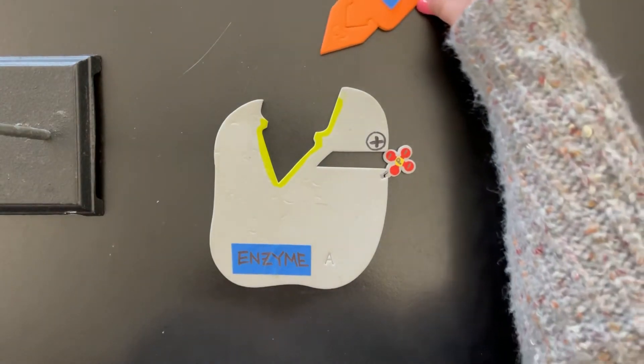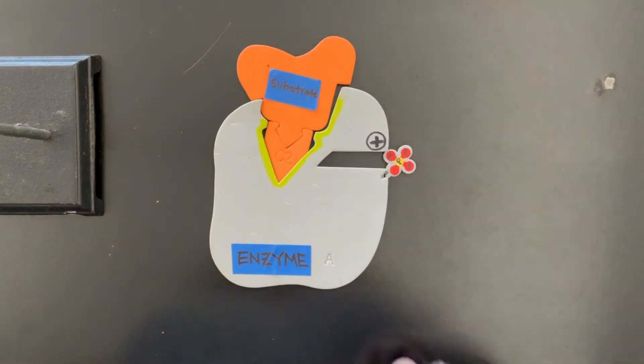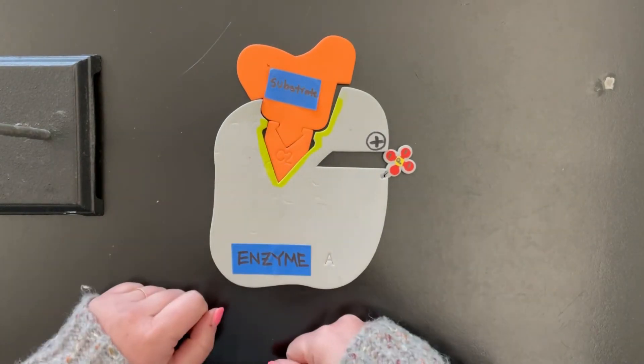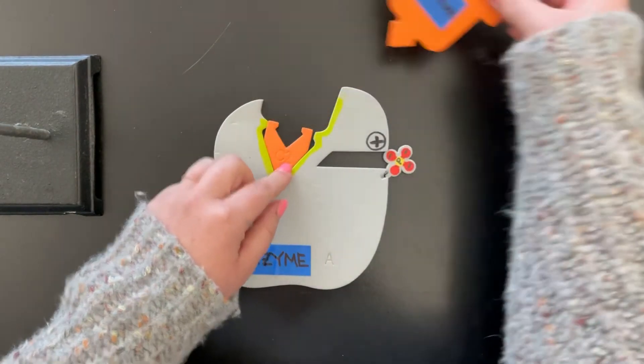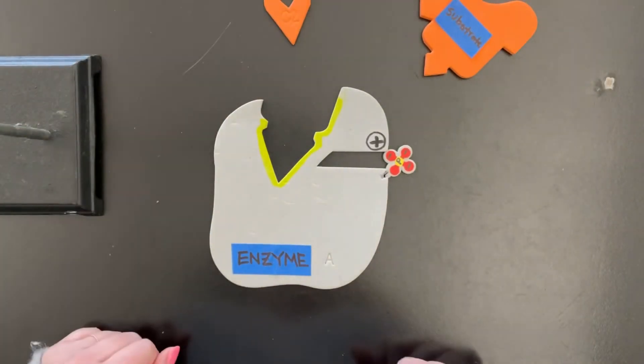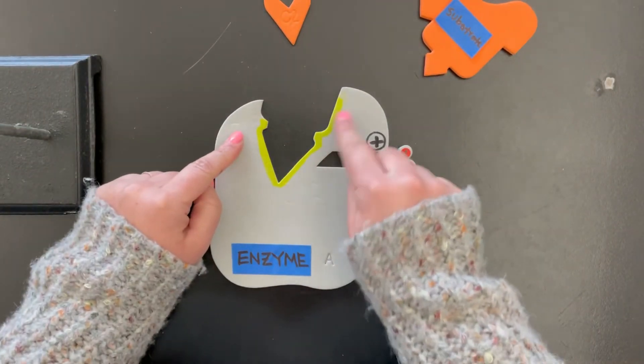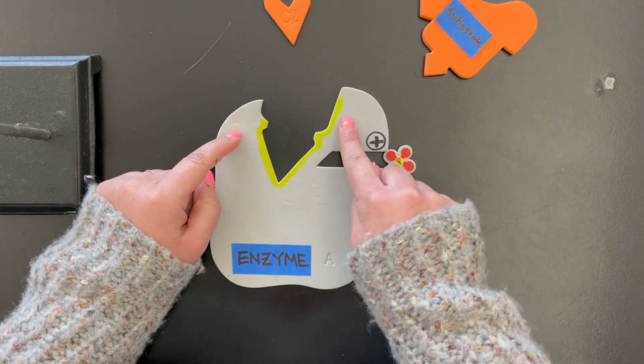Now, if the substrate comes along, ta-da, it fits in the active site. And so now the enzyme is able to act on the substrate, make the products. And that's only because the shape of the enzyme changed.